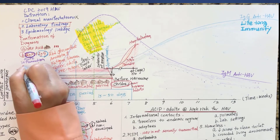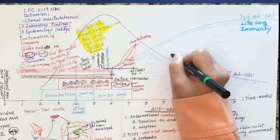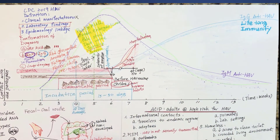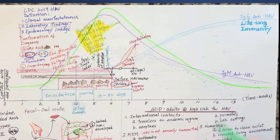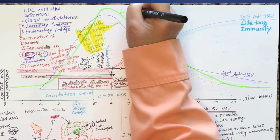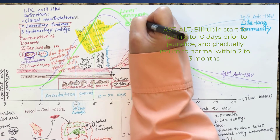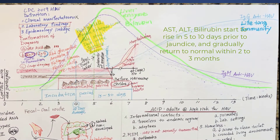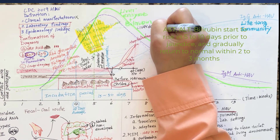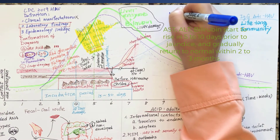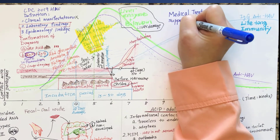The serologic markers can only confirm the infection or make a diagnosis of hepatitis A. The actual damage to the liver is indicated through elevated liver enzymes and bilirubin. The liver enzymes and bilirubin start to climb up about five to ten days before the onset of symptoms, and they return to within normal limits two to three months after the onset.